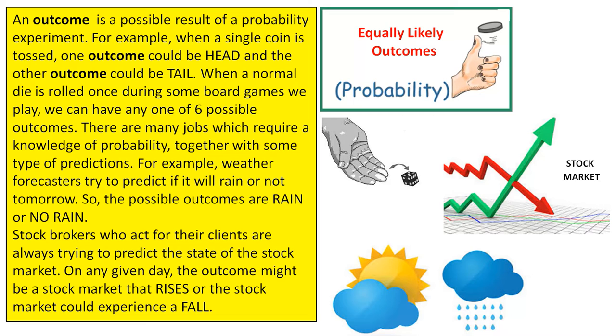When a normal die is rolled once, as in some board games we play, we can have any one of six possible outcomes.